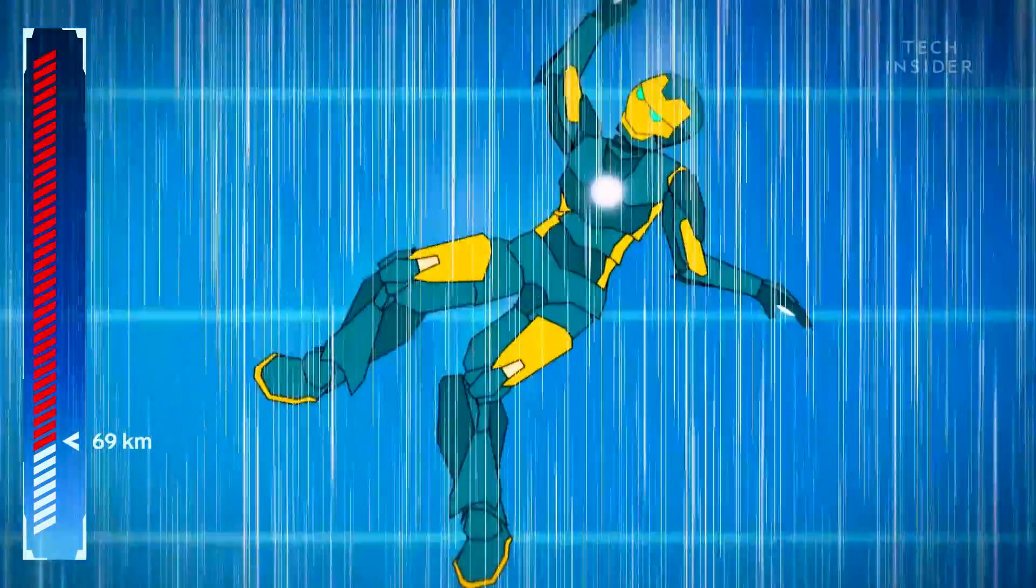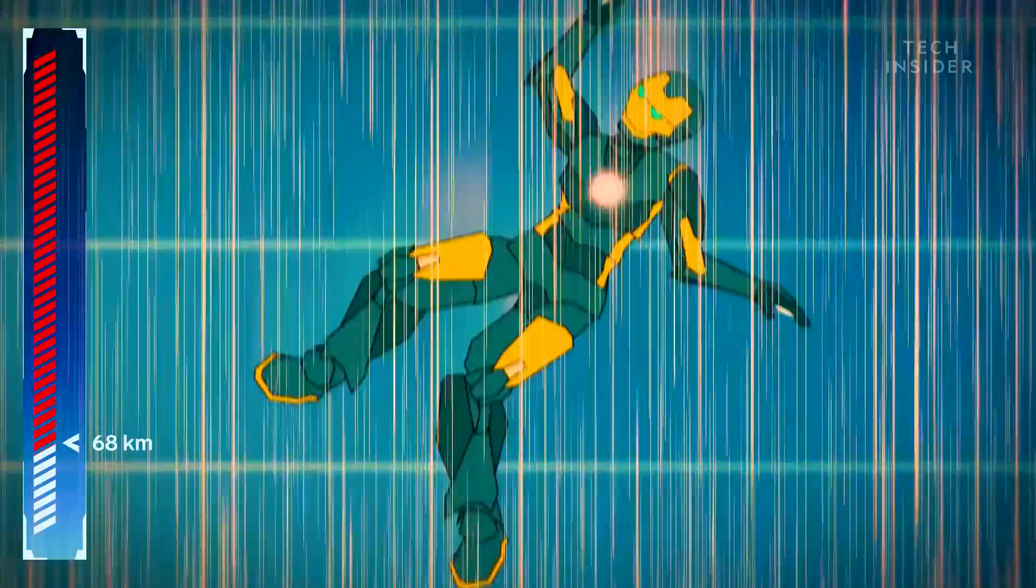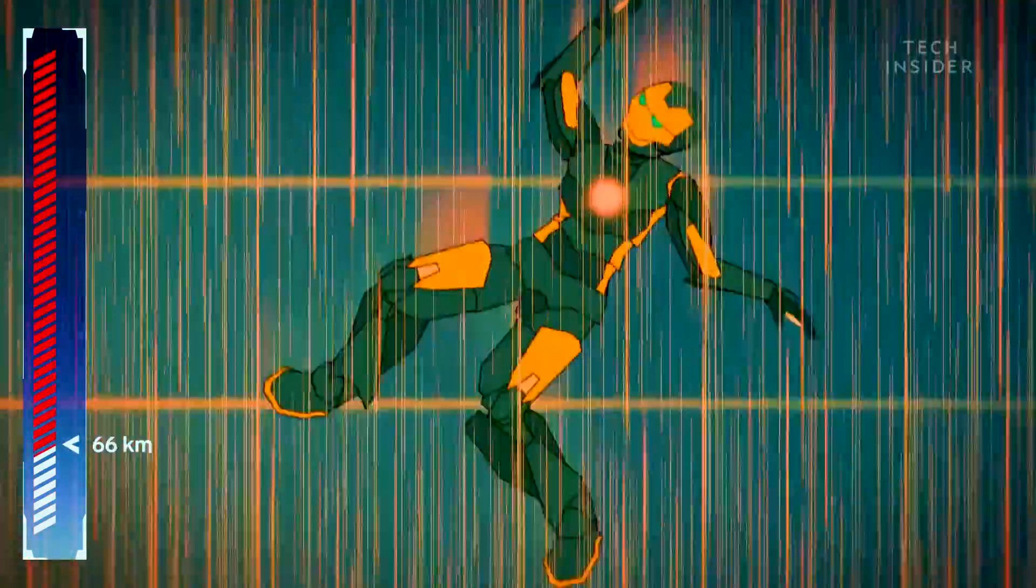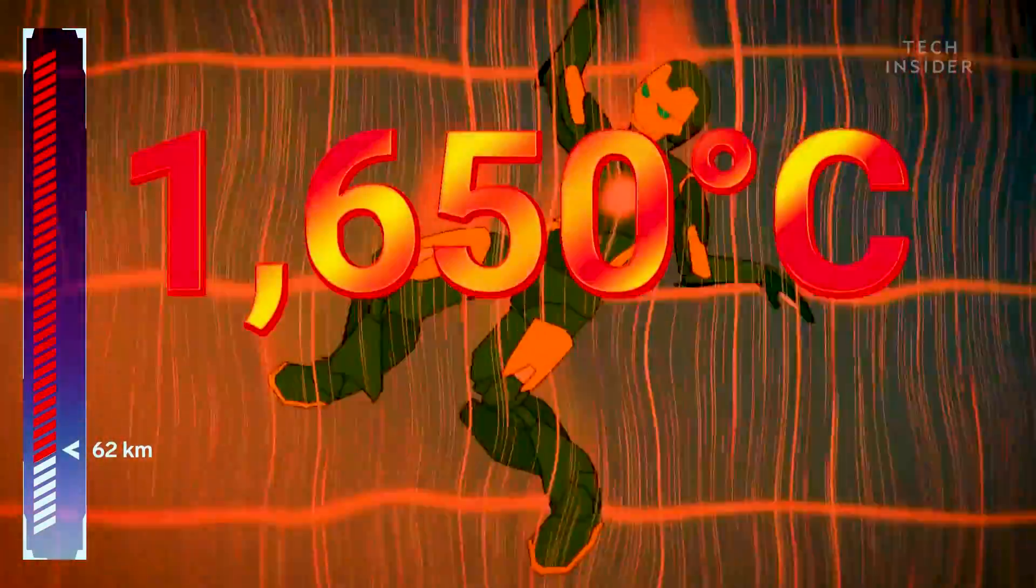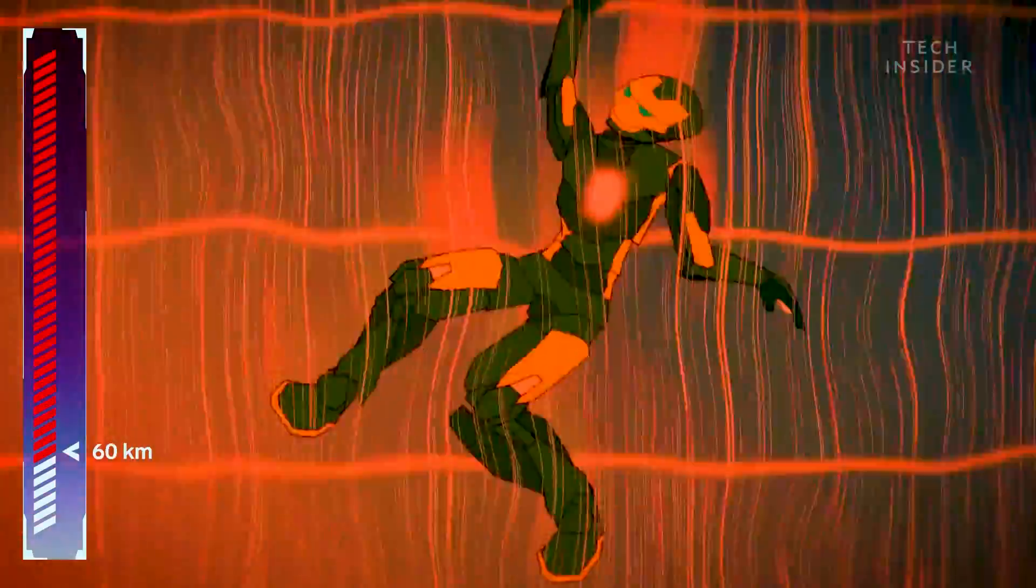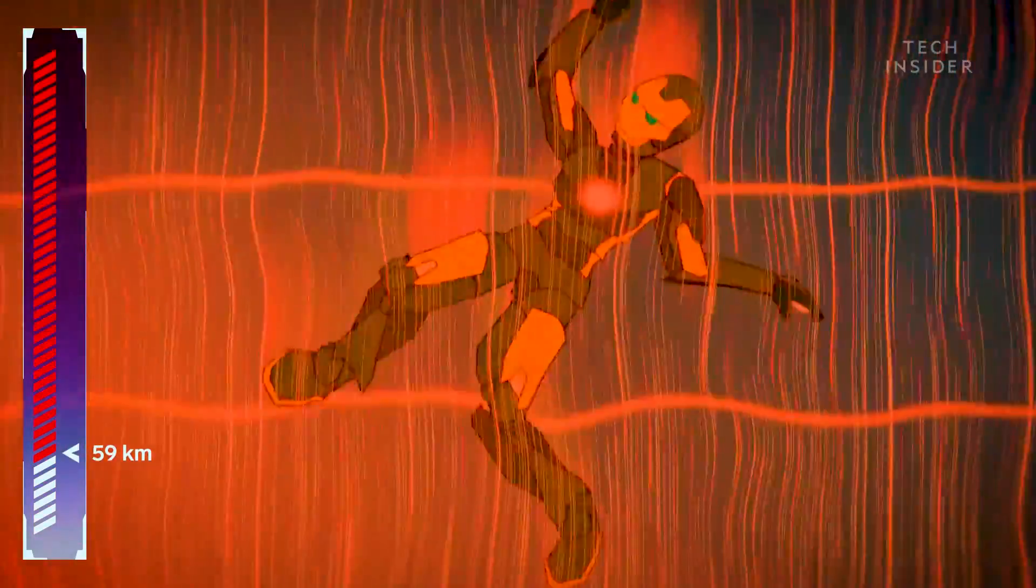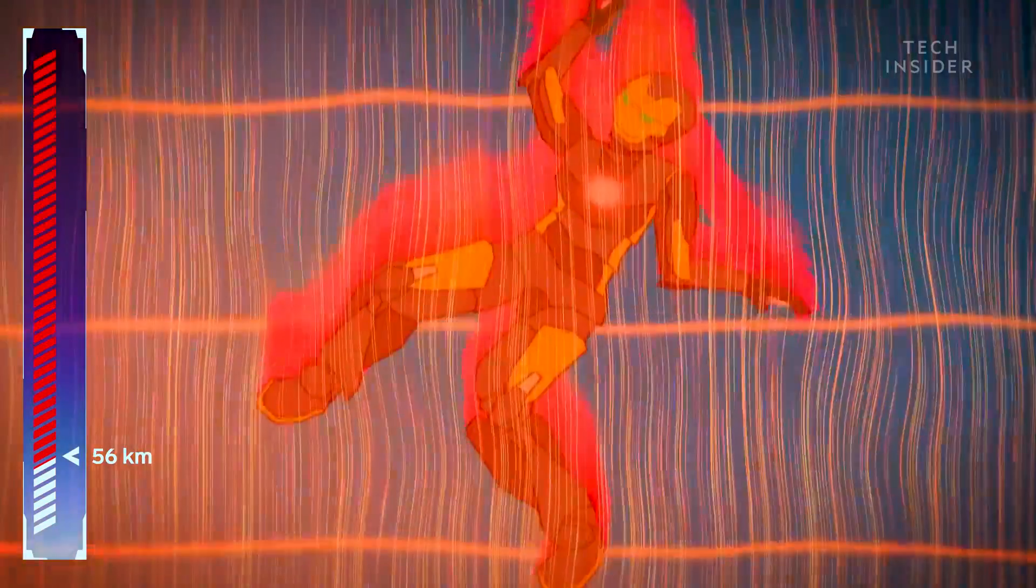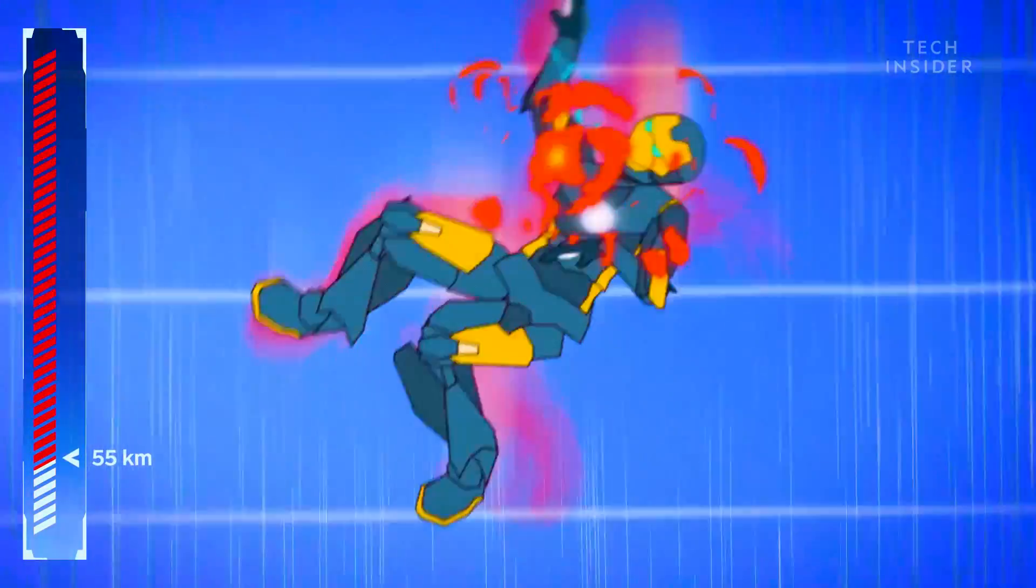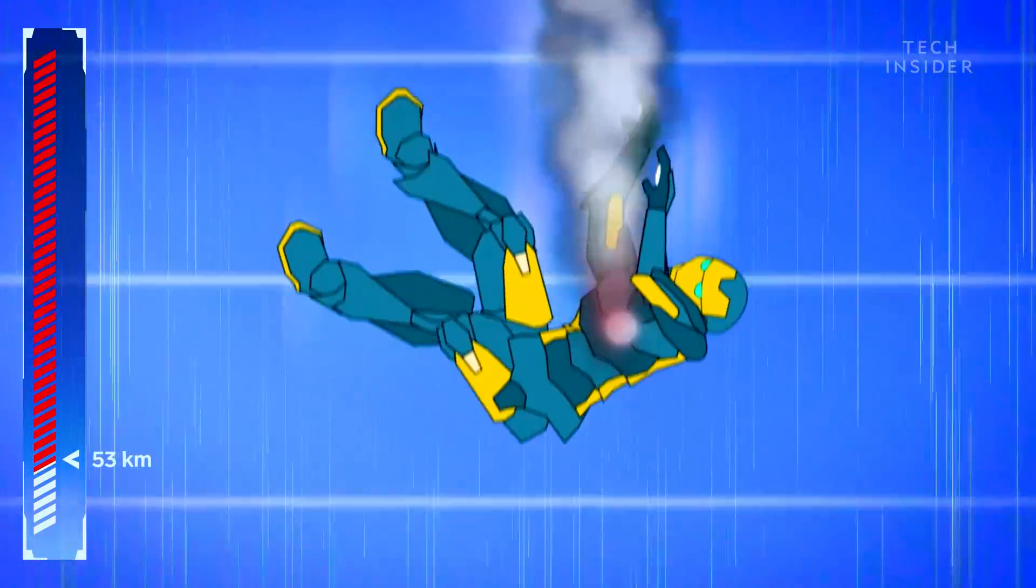But it turns out your suit's more likely to melt than freeze. You know how you could warm your hands by rubbing them together? Now imagine your super suit rubbing against air molecules in the atmosphere at least six times the speed of sound. You'll heat up to about 1,650 degrees Celsius, hot enough to melt iron. In fact, the heat is so intense, it strips electrons from their atoms, forming a pink plasma around you that will ultimately destroy your suit.